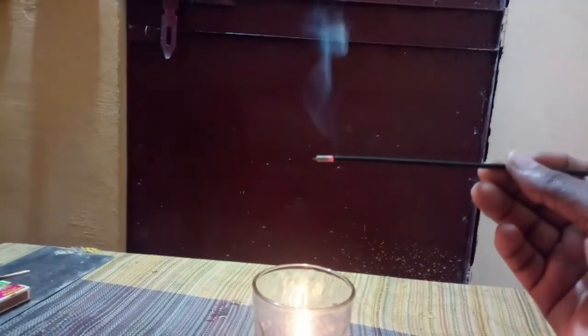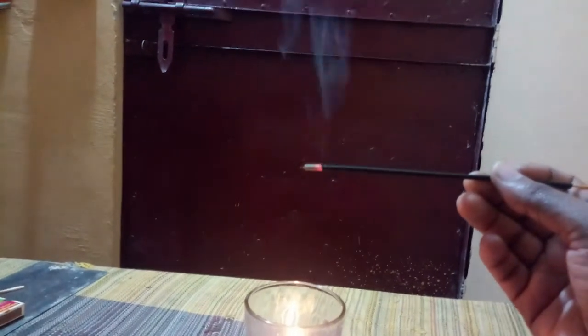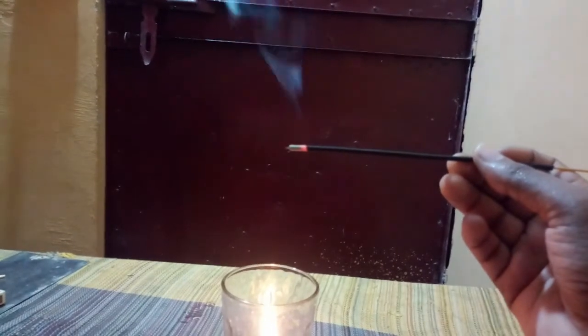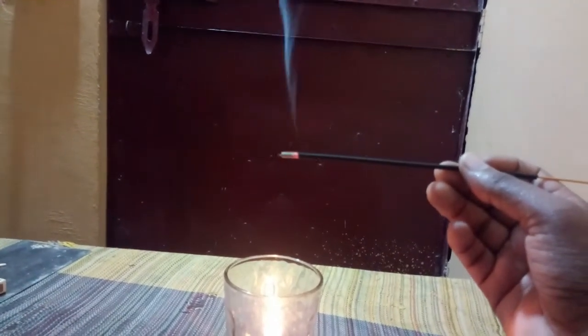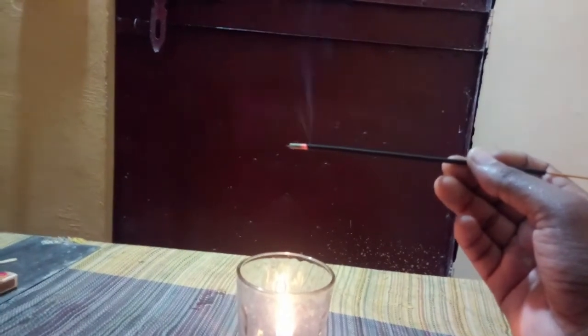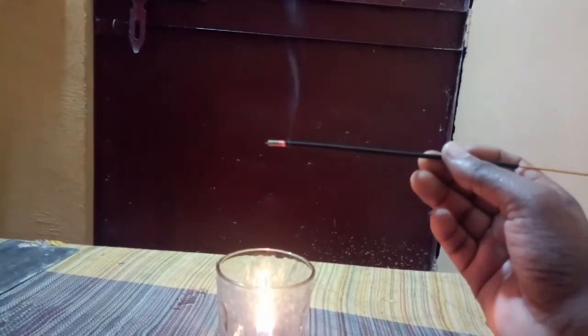But if you bring this incense stick close to the candle or just above the candle, you will see the smoke is now getting up very rapidly. It is going up very fast. So this is how wind currents are generated. So here you can see the smoke, it gets heated up and it is now going up very fast.